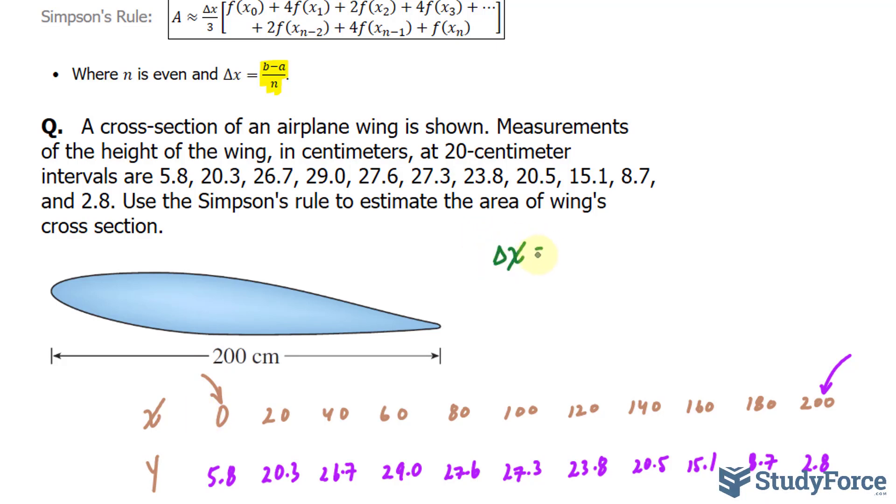Let's substitute that. So we have delta X is equal to 200 minus 0 over, and now we have to choose the amount of intervals we want. In theory, the higher the N value that you choose, the more accurate your approximation is. Now for us, since these numbers are separated by intervals of 20, let's count how many subintervals exist.